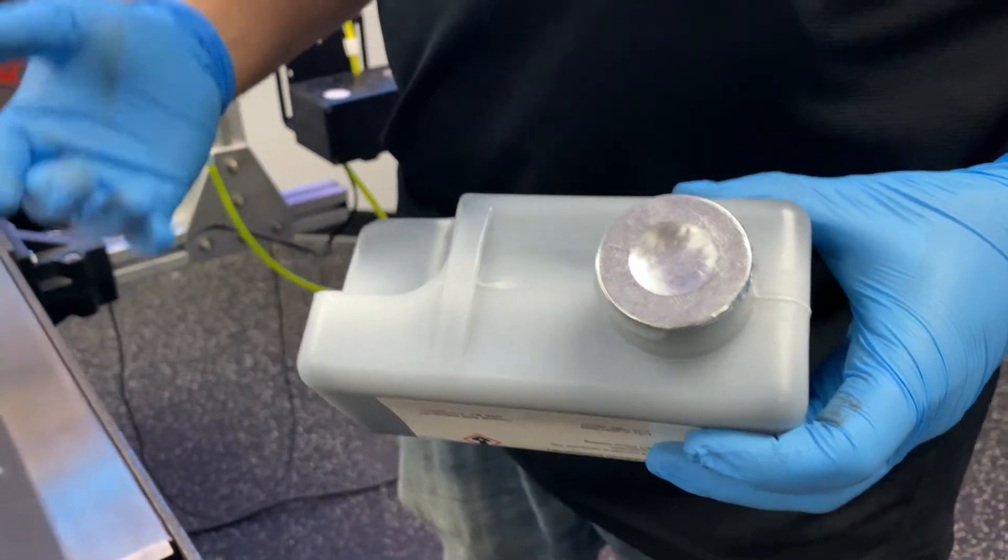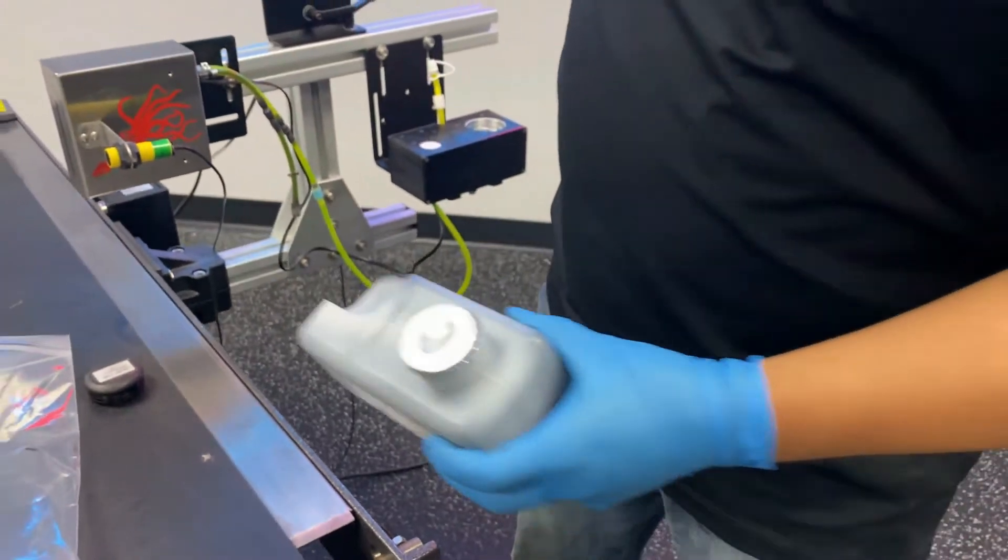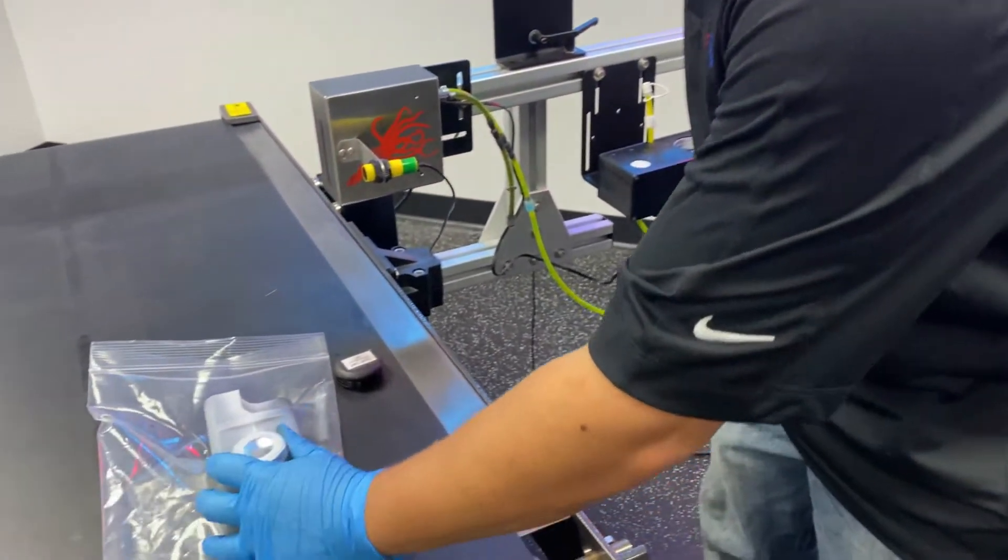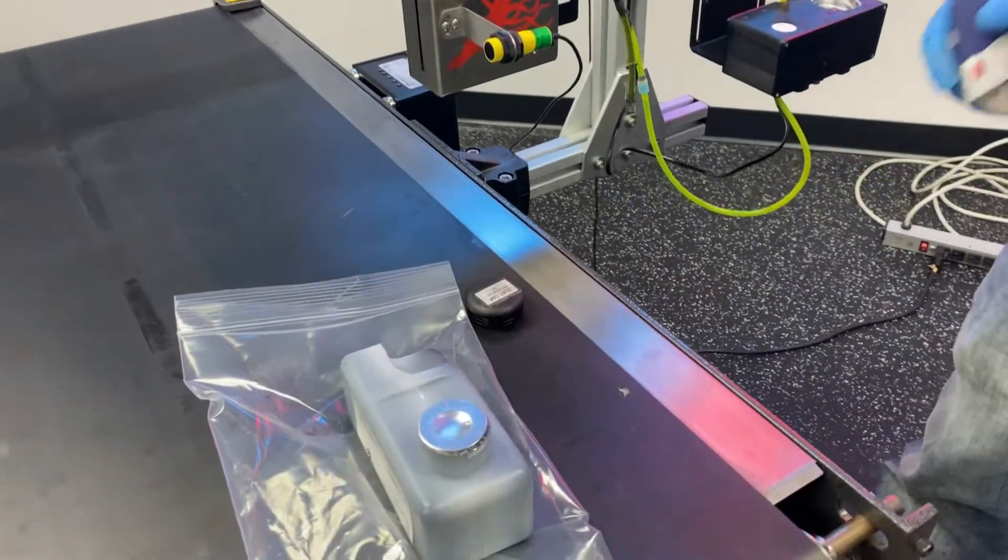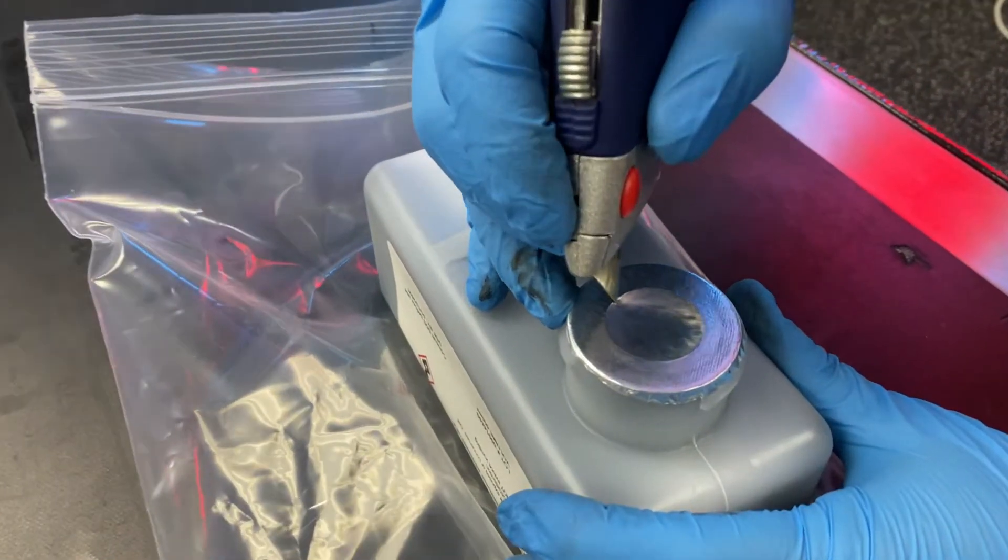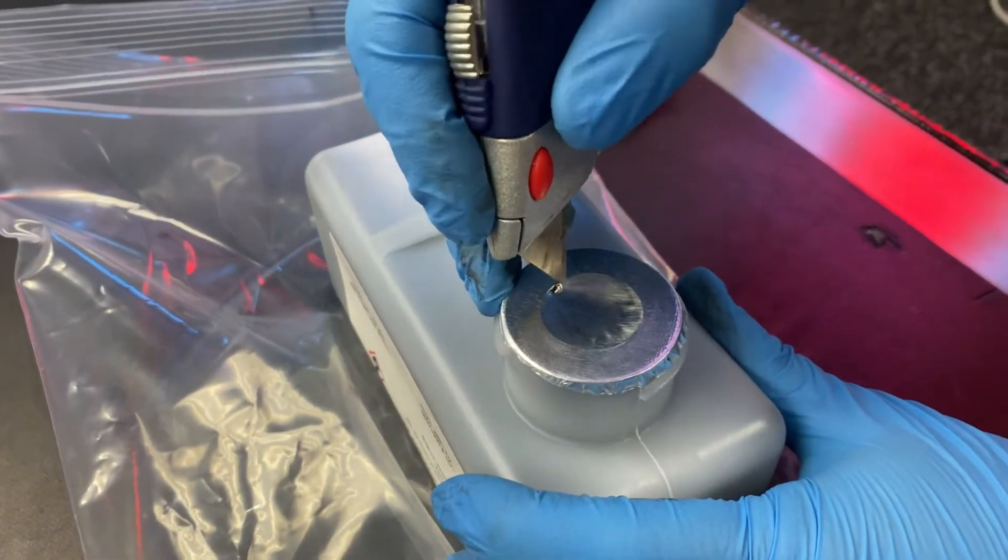To do that, we're going to place our cartridge down and use a knife to carefully cut around the edges.